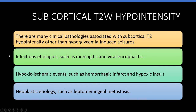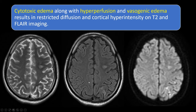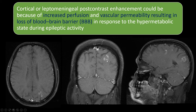Other causes of subcortical T2 hypointensity include infective etiologies like meningitis or viral encephalitis, hemorrhagic infarct or hypoxic ischemic insults, and neoplastic etiology. The cause of restricted diffusion is focal hypoxic or ischemic injury leading to excitotoxic damage and mitochondrial dysfunction, causing failure of the sodium-potassium ATPase pump — cellular swelling leads to cytotoxic edema. The hyperintense cortex on T2 and FLAIR is due to cytotoxic edema along with hyperperfusion and vasogenic edema. Leptomeningeal enhancement is caused by increased perfusion and vascular permeability, resulting in loss of blood-brain barrier integrity.